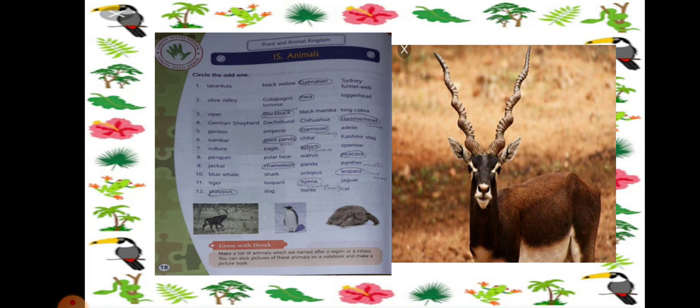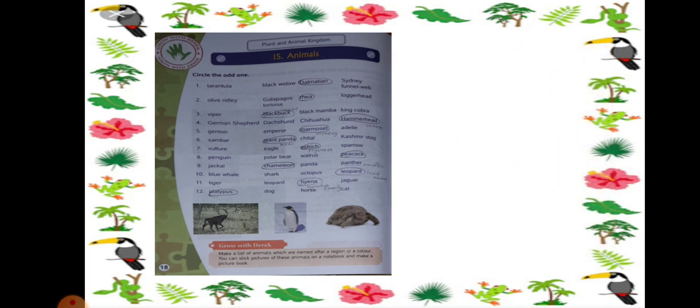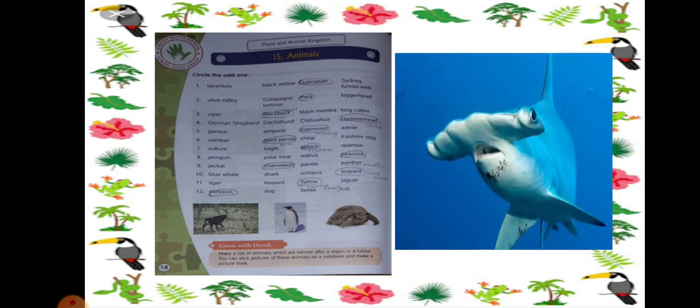Next number 4: German Shepherd, Dachshund, Chihuahua and Hammerhead. So you can see German Shepherd, Dachshund and Chihuahua, they are all the names of dogs. Whereas Hammerhead is a shark. It is a kind of a shark. And this is a shark, Hammerhead. This kind of shark is named as Hammerhead. So the odd one is Hammerhead. Please circle Hammerhead.